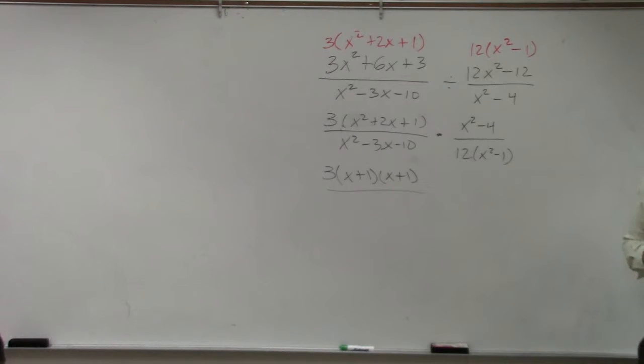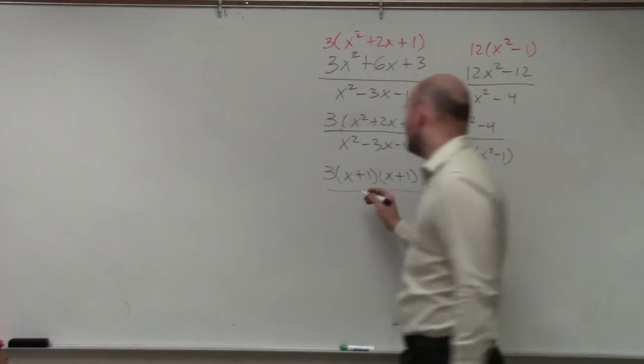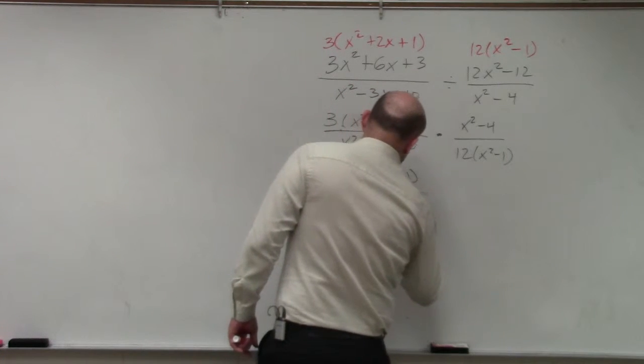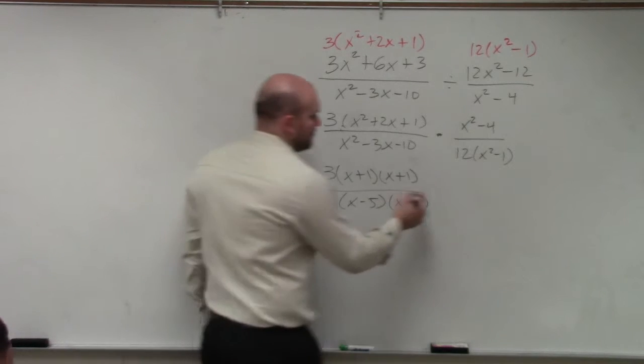The denominator, x squared minus 3x minus 10. What two numbers multiply to give you negative 10? Add to give you negative 3. All right, we're trying to get these done. Remember these quickly.